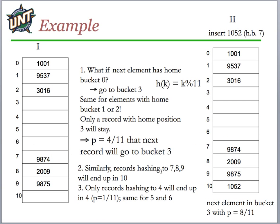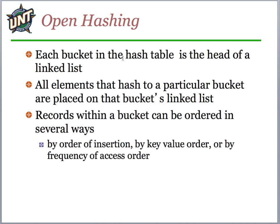Using random probing increases the likelihood of finding an empty slot on the first or second try, as long as it generates the same pseudo-random sequence. Here's an example: inserting key 1052 using k mod 11 with 11 buckets. The home bucket might be zero, or another element would go to bucket three. Elements with home buckets one or two would also go to three, so we need different strategies to find where those next ones go.